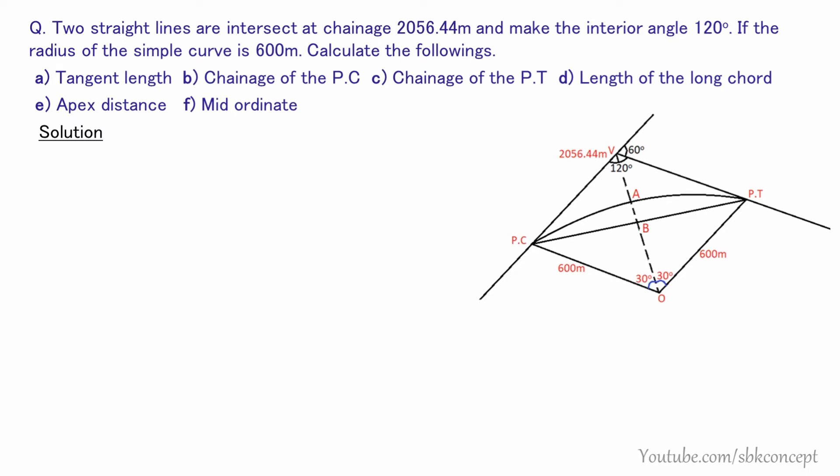We also have the apex distance — the distance from the PI to the midpoint of the curve, labeled BA. And then the mid-ordinate, which is the distance from the midpoint of the long chord to the midpoint of the curve. The deflection angle is 60 degrees — from the back tangent to the forward tangent.